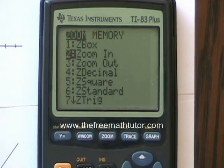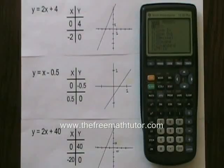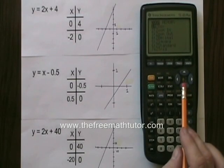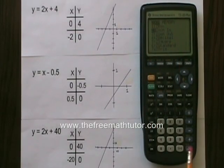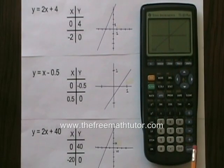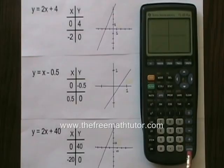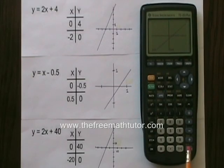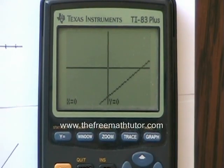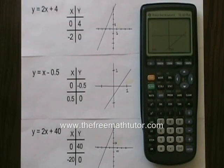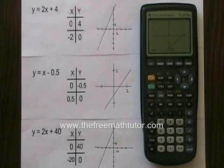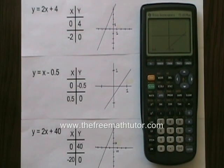And I want to zoom in. So I'm going down to number 2, zoom in. I hit enter to choose that. And then I hit enter again. And if I want, one more time. Now I can see my graph quite well. I can see my x and y intercepts quite clearly.